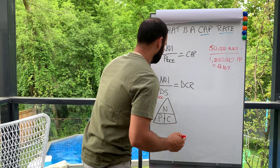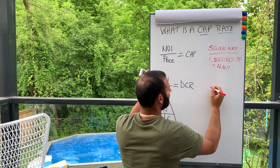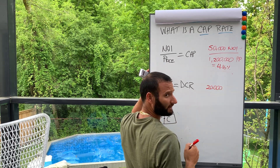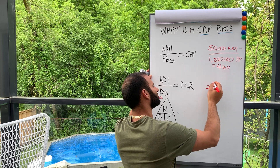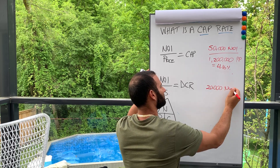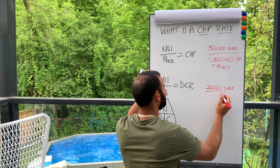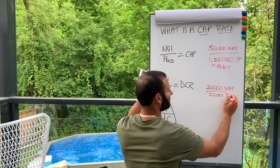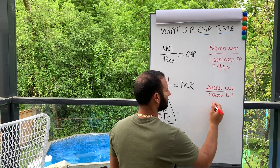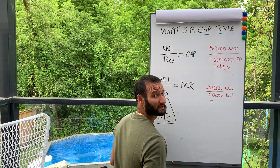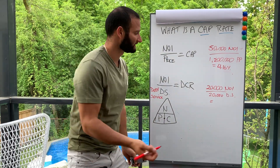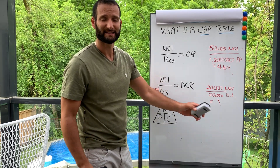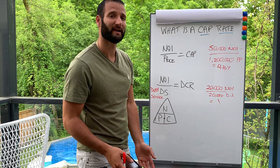Here's a simple example: let's say your NOI for the year is twenty thousand dollars. You subtracted your expenses from gross income and got twenty thousand NOI. And let's say your debt service is also twenty thousand. Twenty thousand divided by twenty thousand equals one — your property is break even.